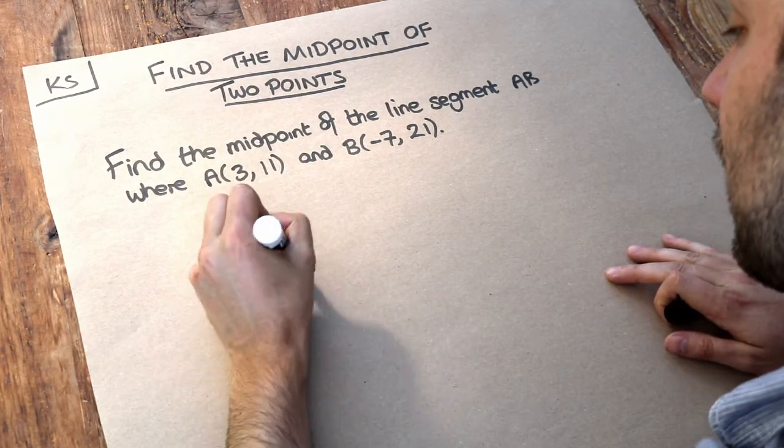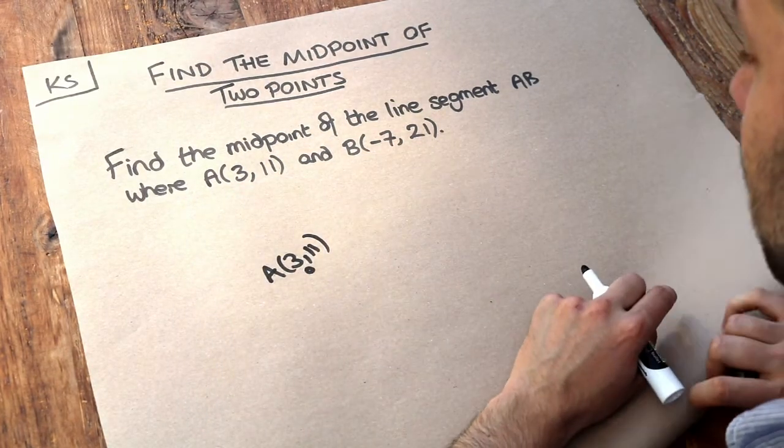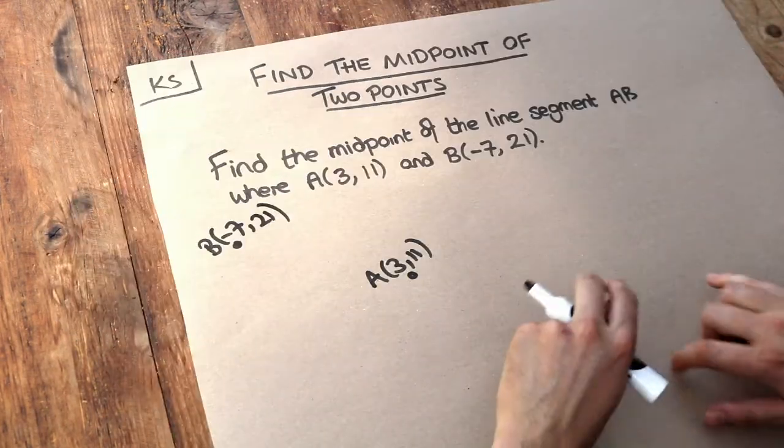We've got A which is (3,11) and then we've got another point B which is (-7,21), so that might be somewhere up here. It doesn't matter exactly where I've drawn them.